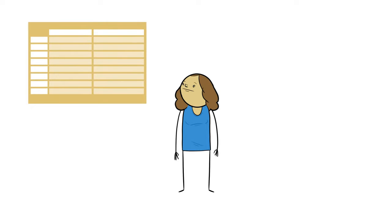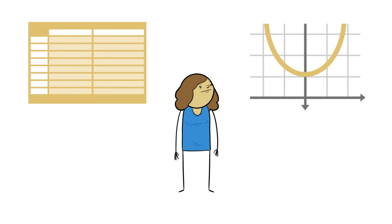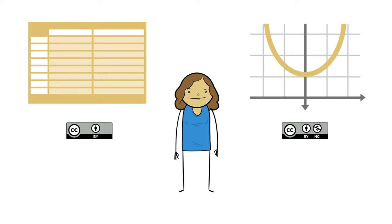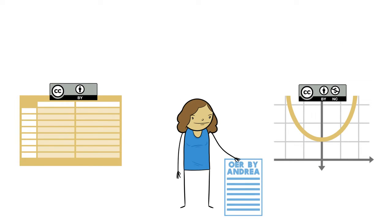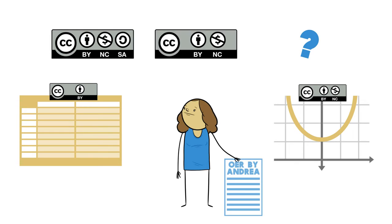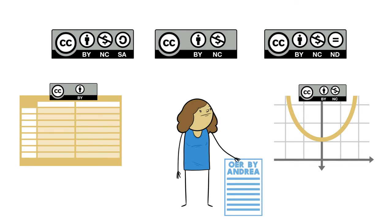Andrea has found two resources that she wants to use with her own writing. One is an extensive table with useful information for students, and the other is a diagram that shows the relationships among complex variables in a way that makes them easier for students to grasp. The table is found in a work with an attribution license. The diagram carries an attribution non-commercial license. She is confident she can use these assets for her open textbook chapter, but she wonders what licenses she can apply to her finished work. Considering the stipulations of the BY NC license, she figures she can use a BY NC, a BY NC SA, or a BY NC ND license. Right, Beth?